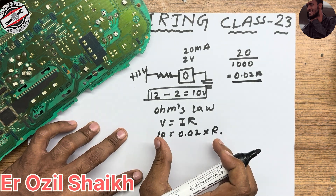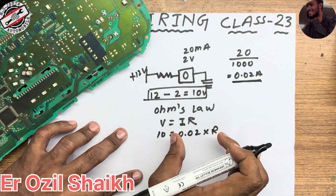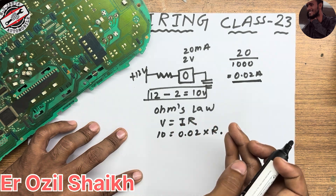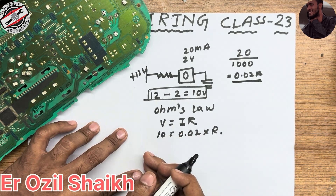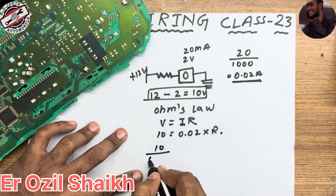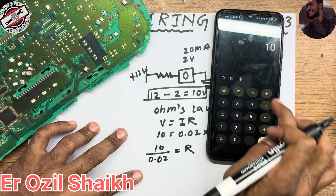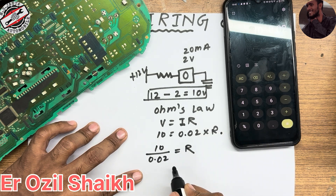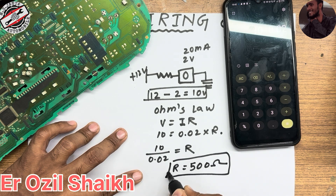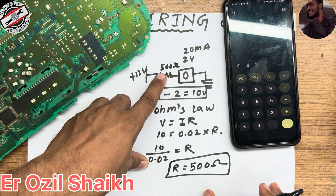According to the standard law of mathematics, if the right side is in multiplication, it shifts to the left side as division. So R = 10 ÷ 0.02, which gives R = 500 ohm. So if you apply 500 ohm resistance you get the correct voltage drop.